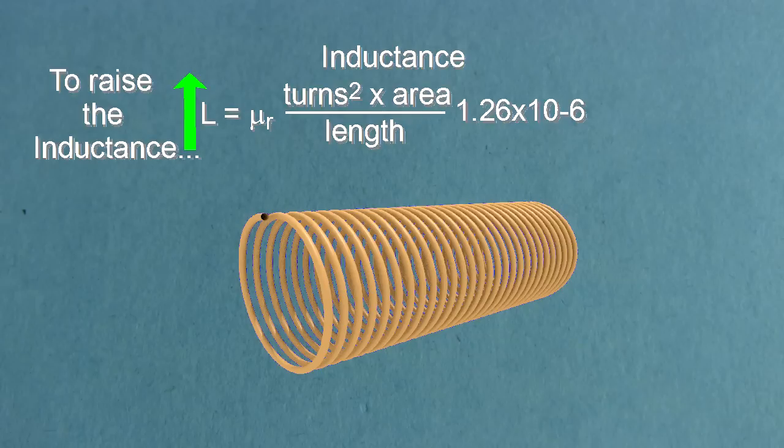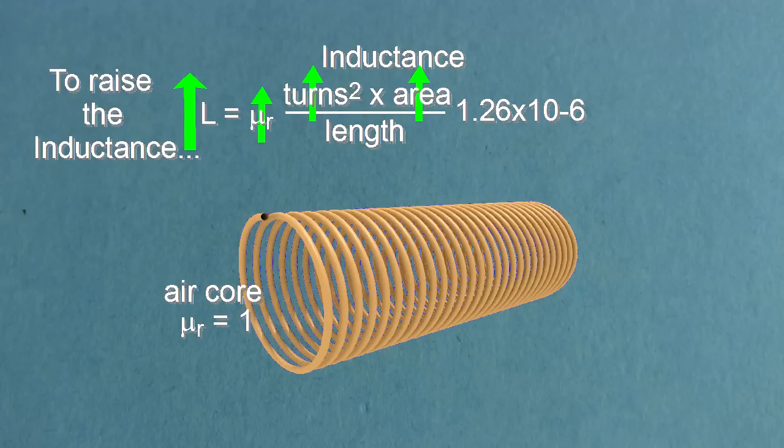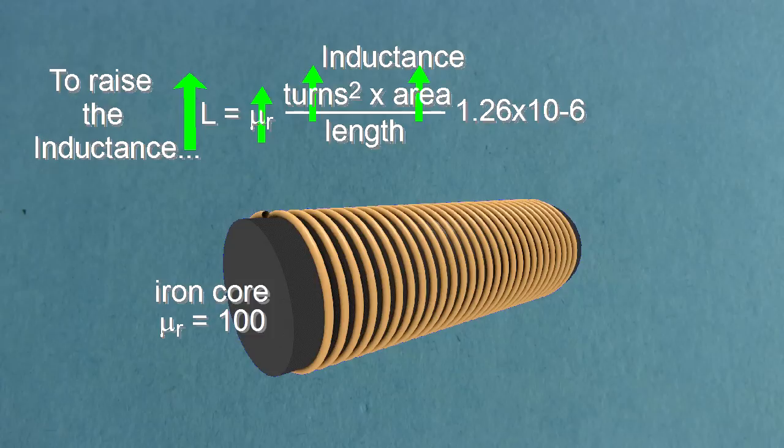What if the inductance you calculate is lower than you want? In that case, increase the number of turns or the area. Switching to a higher relative permeability material will also increase the inductance. So replacing an air core with its permeability of 1 with an iron core with its permeability of 100 will give a higher inductance.